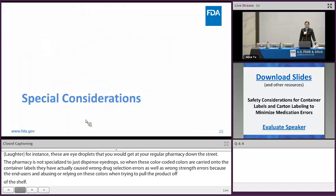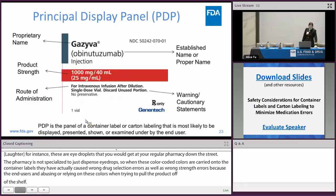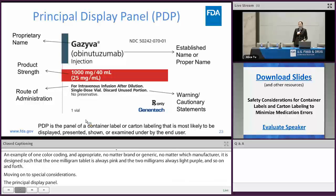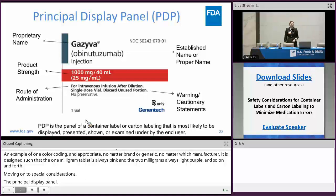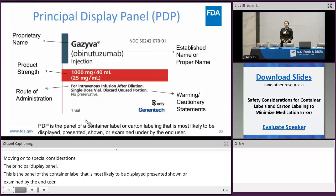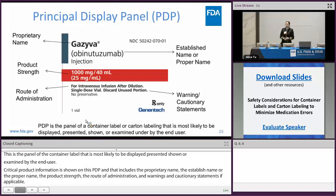Moving on to special considerations. The principal display panel is the panel of a container label or current labeling that is most likely to be displayed, presented, shown, or examined by the end user. Critical product information should appear on this PDP, including the proprietary name, the established name or proper name, the product strength, the route of administration, and any warning and cautionary statements if applicable. On the PDP, you also want to maximize the presentation of your proprietary name and established name or proper name, because these are the unique identifiers of your drug product.